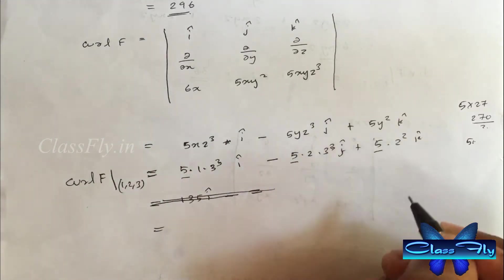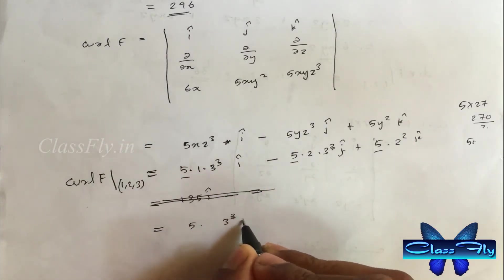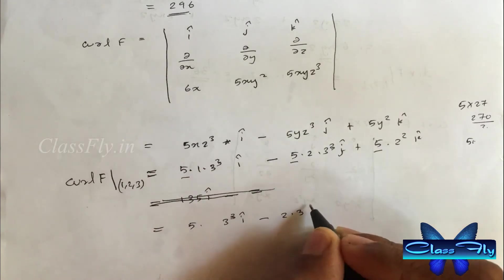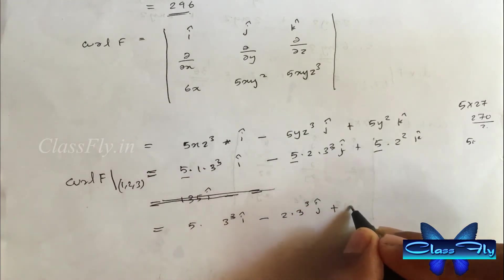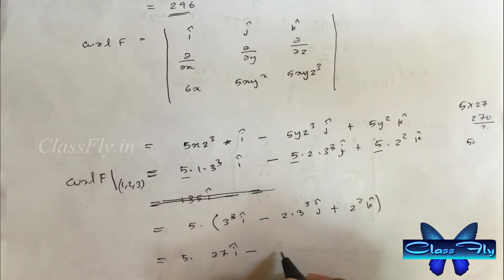Similarly for curl F we have to solve the determinant. After solving the determinant, simplify the equation and substitute the point (1, 2, 3). Now take 5 as common and write the solution that is 5 times 27 i cap minus 54 j cap plus 4 k cap.